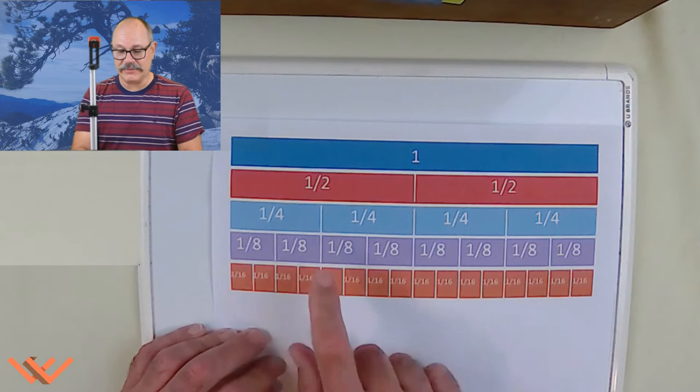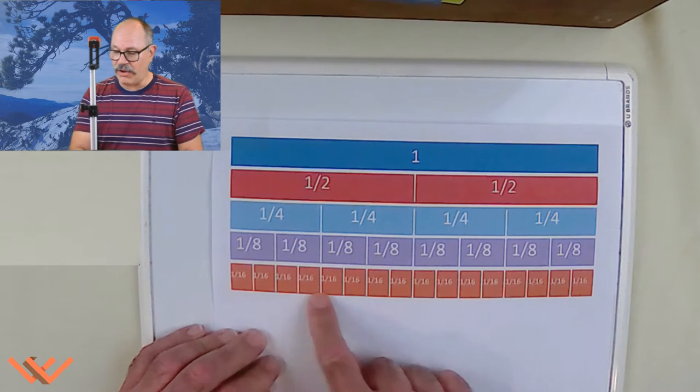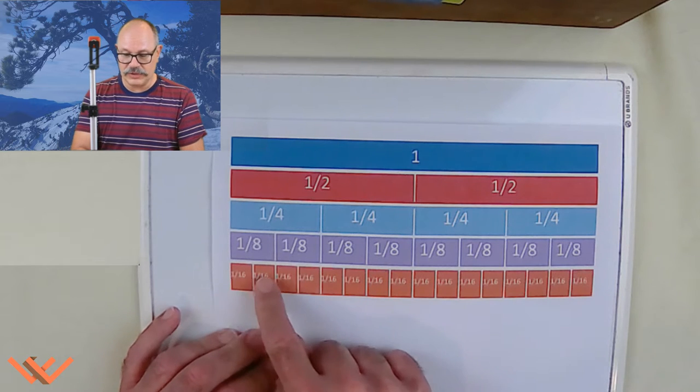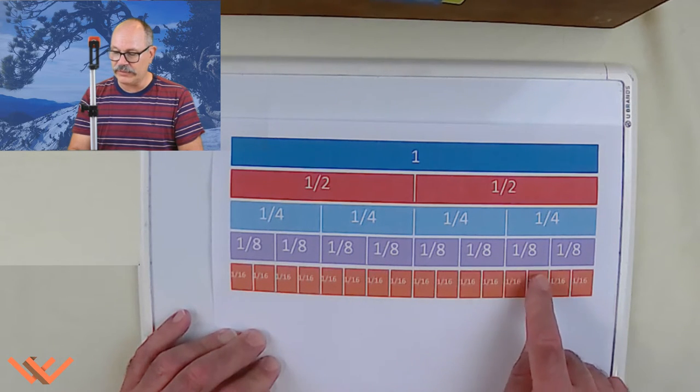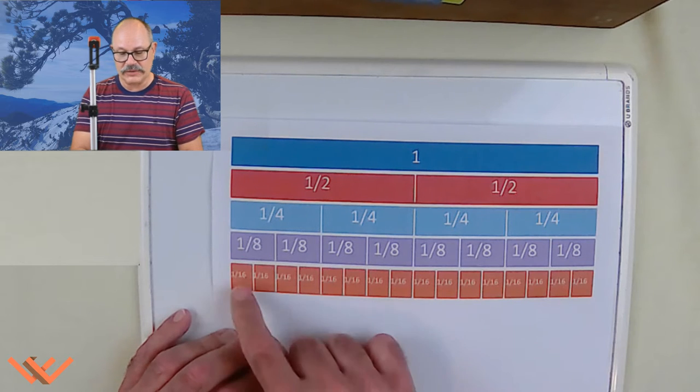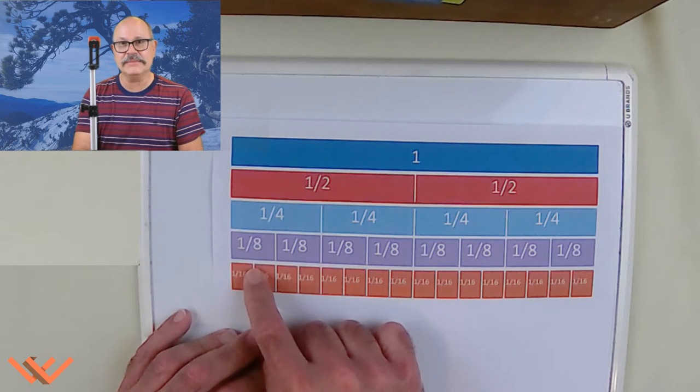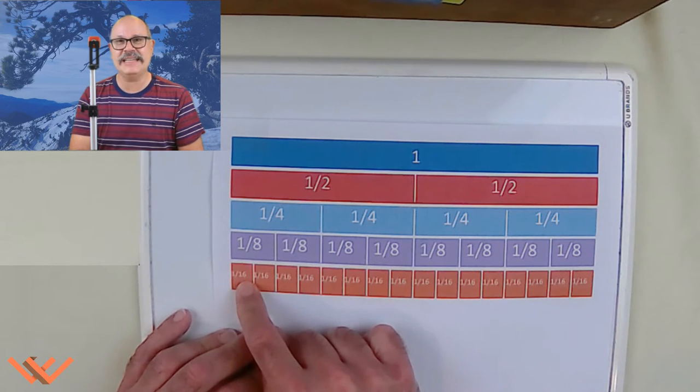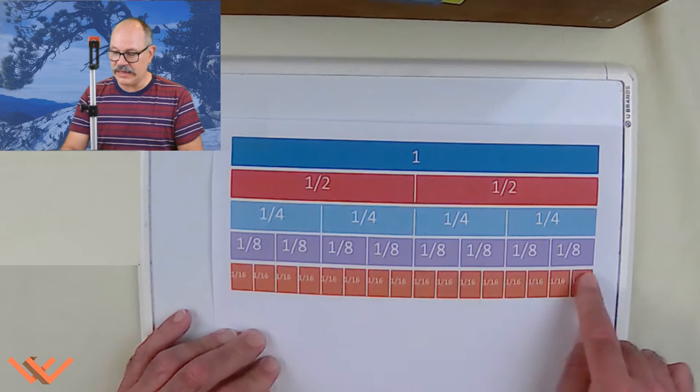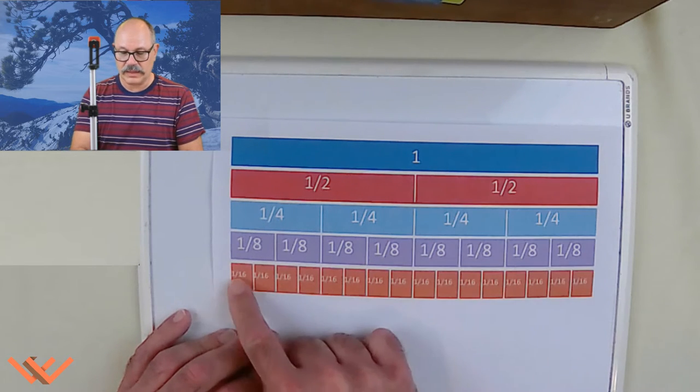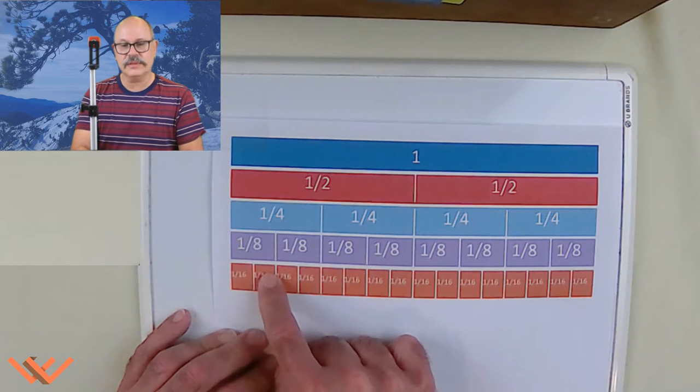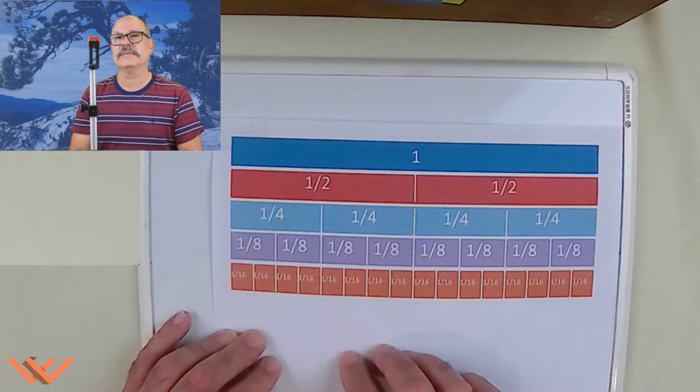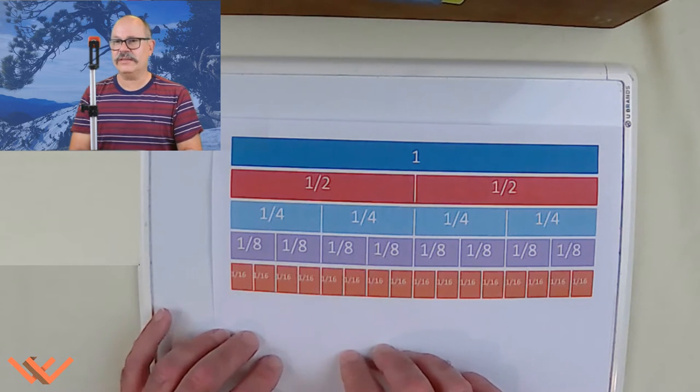Following along, this is pretty easy stuff. Next I have... Look at all these pieces here. I have one, two, three, four, five, six, seven, eight, nine, ten, eleven, twelve, thirteen, fourteen, fifteen, sixteen. That's why it has one over sixteen. And that's a one sixteenth. And there's sixteen to one whole. Eight to one half. Four to one quarter. And two to one eighth. See how we have equivalency there?